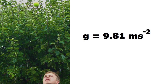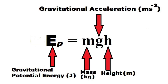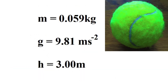So how can we calculate the gravitational potential energy of an object? We need to use the following equation, which states that to calculate the GPE of an object, we must multiply its mass — given in kilograms — by the value given to acceleration due to gravity, which is in metres per second squared, and then multiply by the height of the object's position in relation to the ground, which is given in metres.